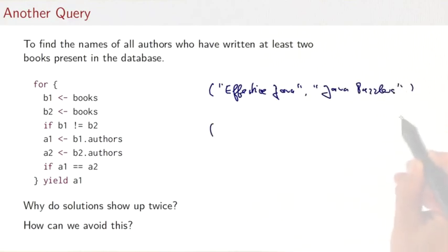And then we would have another pair where the two were swapped. That's why we get the same couple of books in two pairs and why the solutions show up twice.